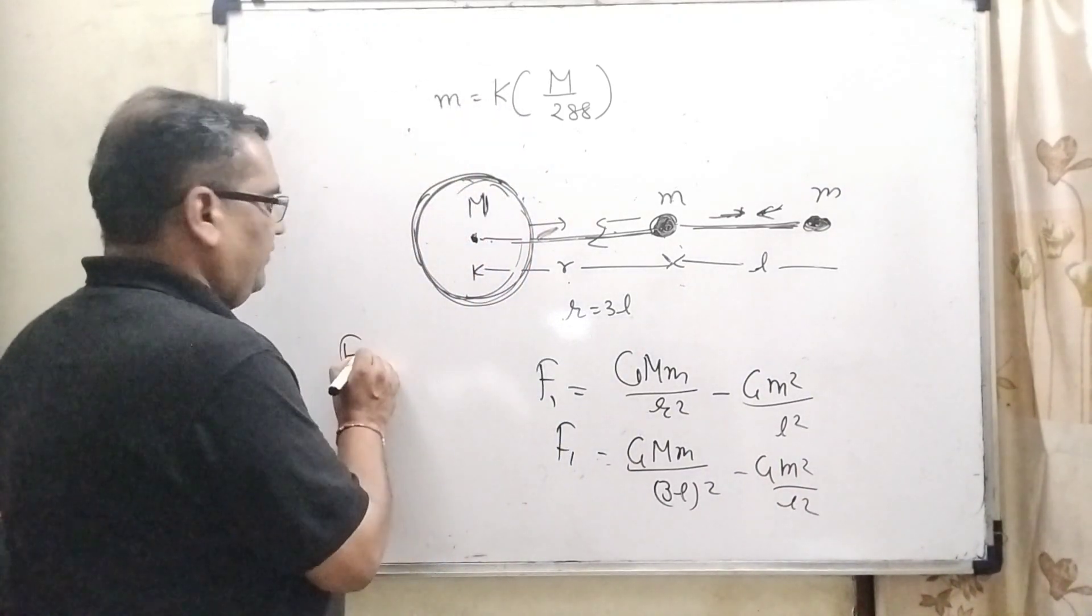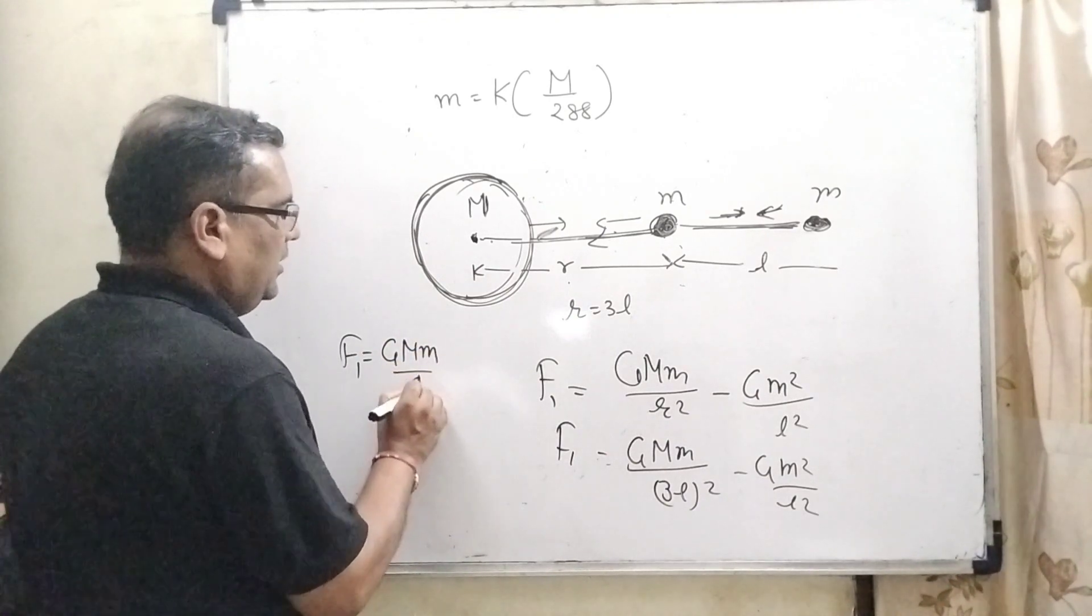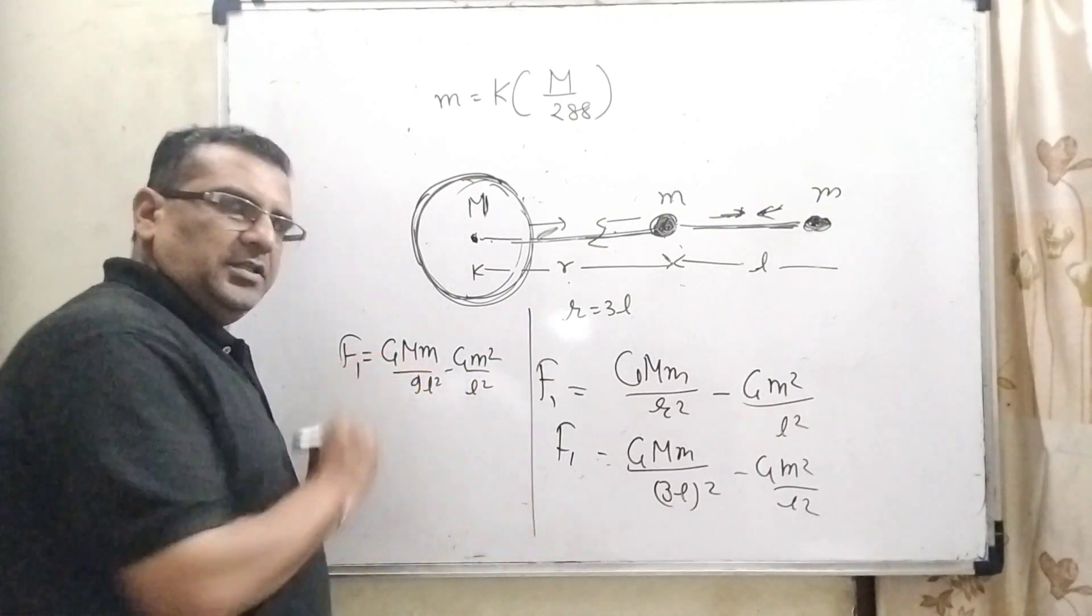So here F1 equals G capital M small m upon 9L square minus G M square upon L square. This is the first condition.